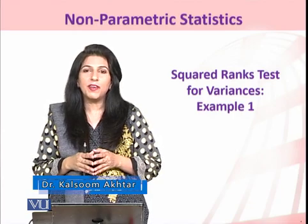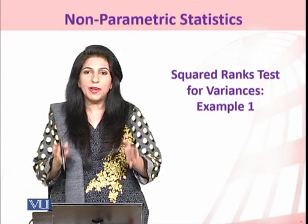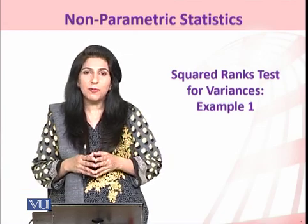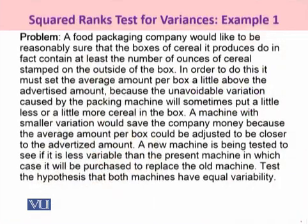I will be sharing with you one real-life example where our objective is to test whether the variances of two populations are identical to each other. The problem in hand is a real-life problem about a food packaging company who would like to be reasonably sure that the boxes of cereal it produces do in fact contain at least the number of ounces of cereal stamped on the outside of the box. So this is a kind of quality control example.